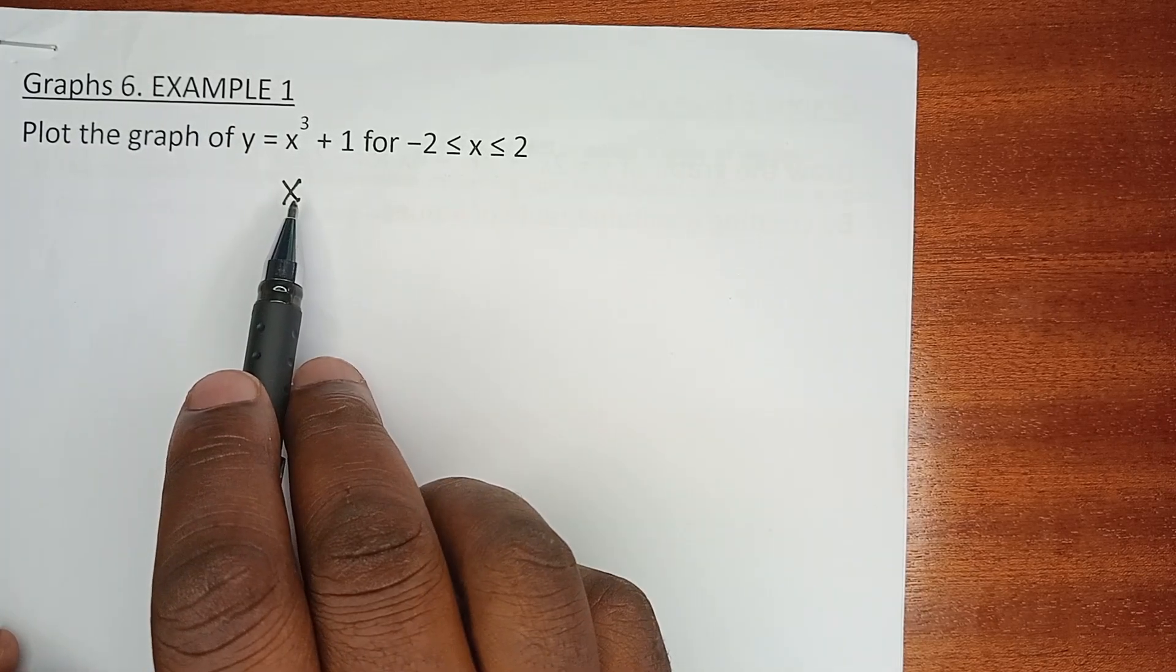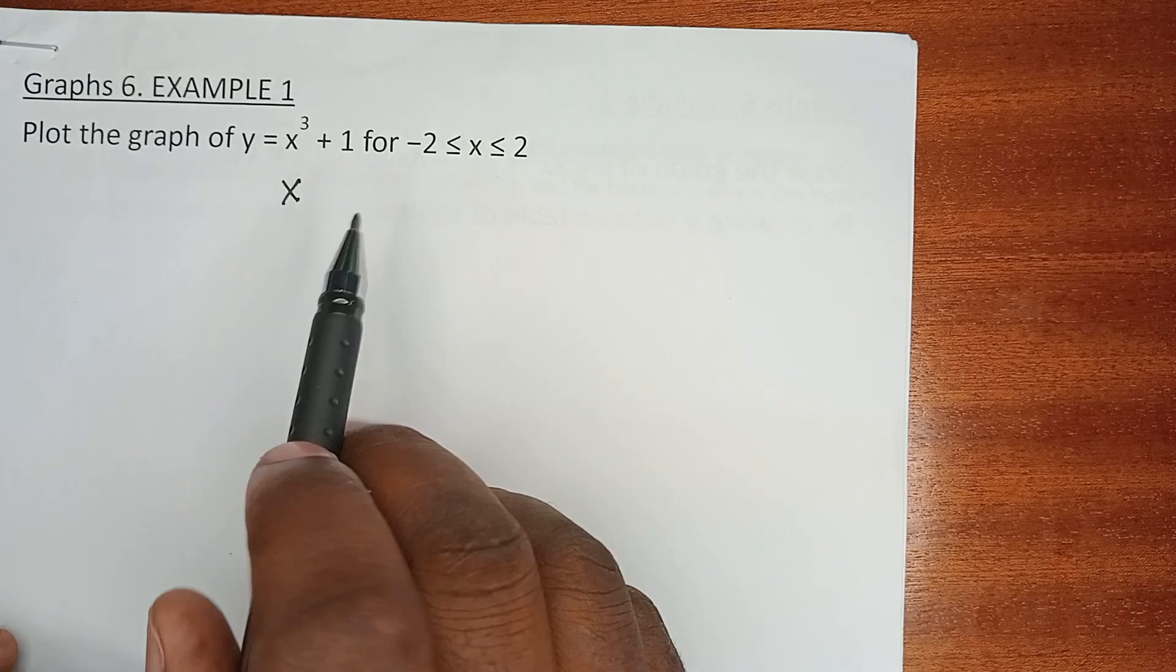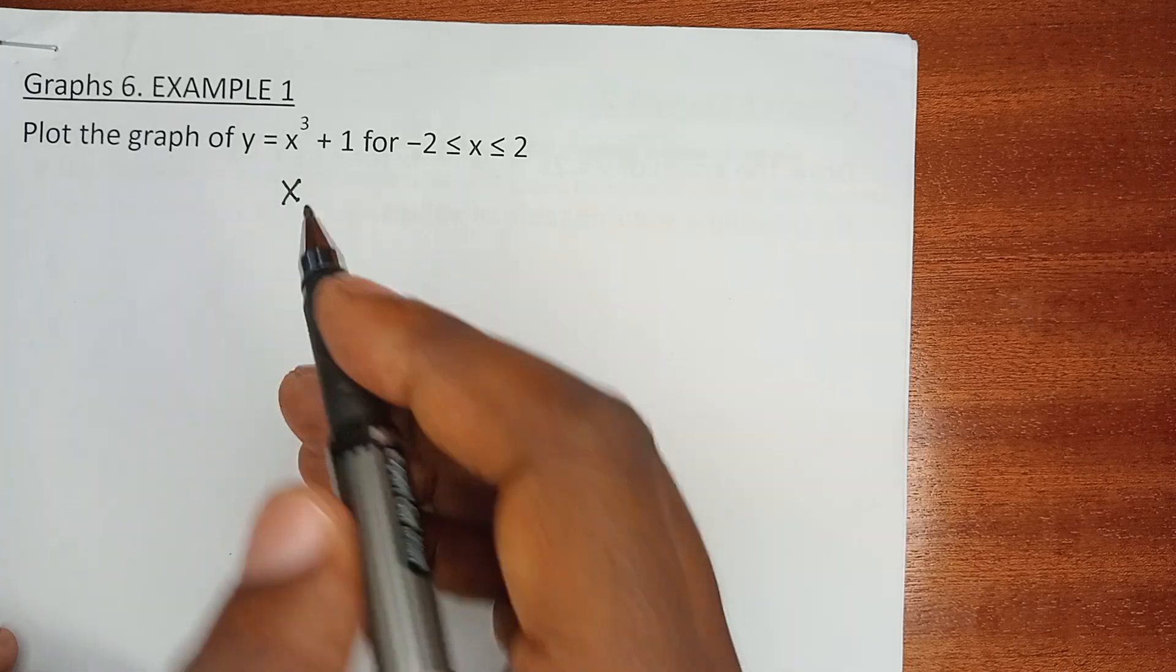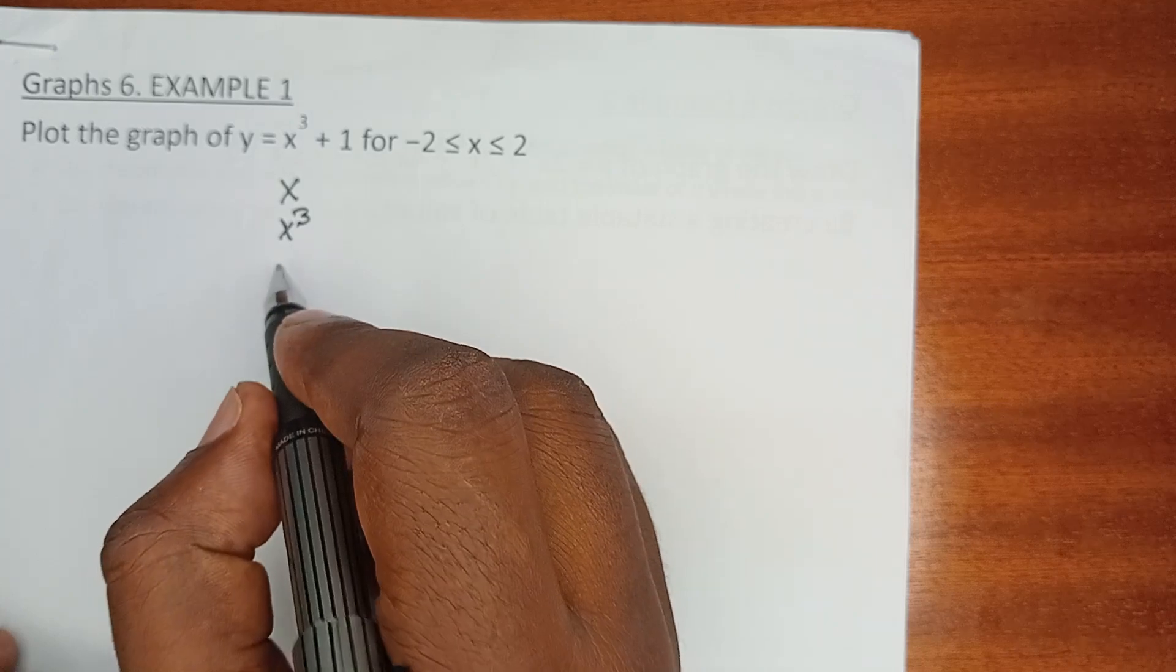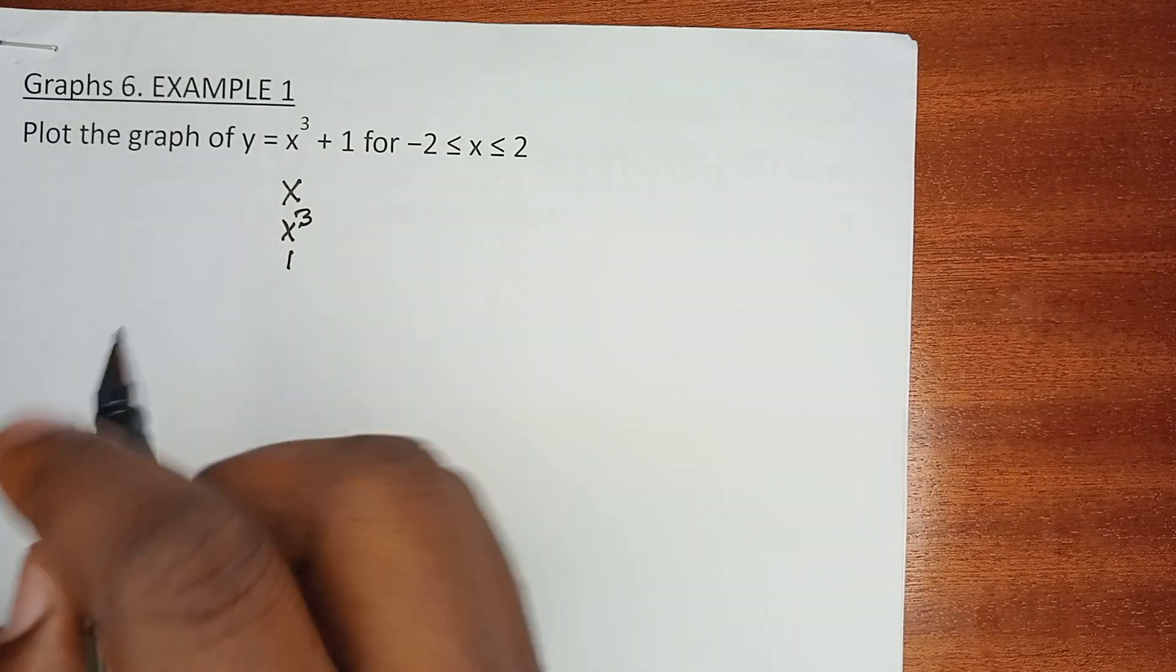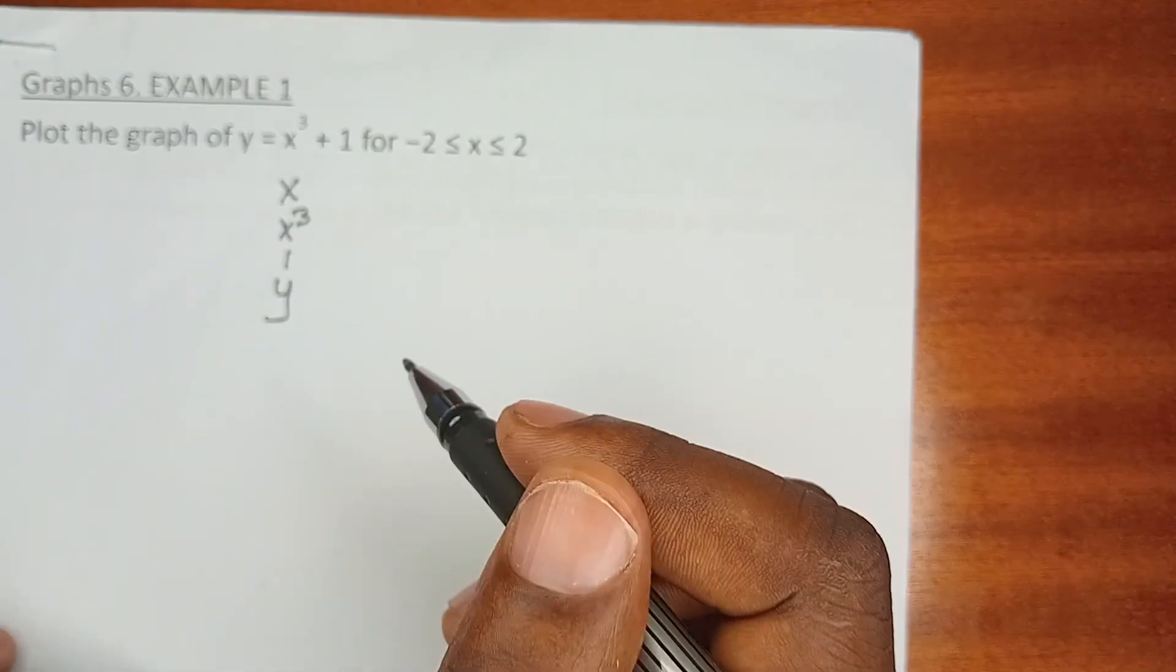We need to have a primary variable which is x, and then we have x cubed, and then we'll have a constant 1 here, and finally we will have y itself, and we will explain why I need all this.